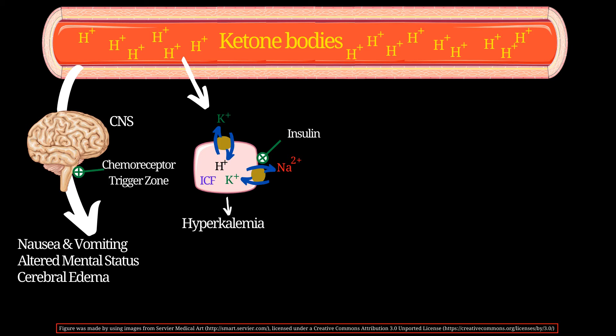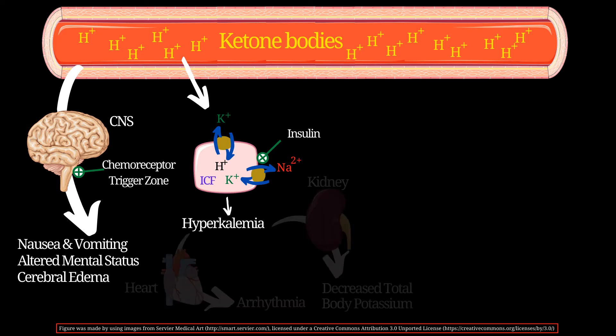There is another channel on the cell membrane called the sodium-potassium channel, which is responsible for keeping potassium inside the cell. It brings potassium into the cell by moving sodium out. This channel is stimulated by insulin. In DKA, since there is no insulin, the sodium-potassium channel does not work properly and will further promote hyperkalemia.